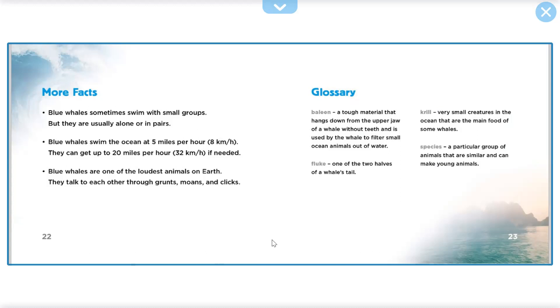Glossary. Baleen: a tough material that hangs down from the upper jaw of a whale without teeth and is used by the whale to filter small ocean animals out of water. Fluke: one of the two halves of a whale's tail. Krill: very small creatures in the ocean that are the main food of some whales. Species: a particular group of animals that are similar and can make young animals.